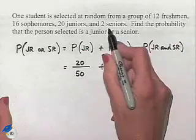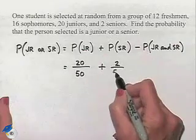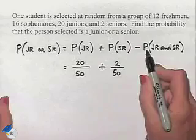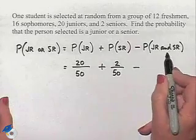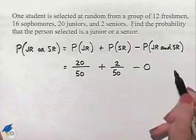Plus, we have two seniors from this group of 50 that could be chosen. Now, is there any student who's both a junior and a senior? No. So the probability of choosing someone who fits that category would be 0.